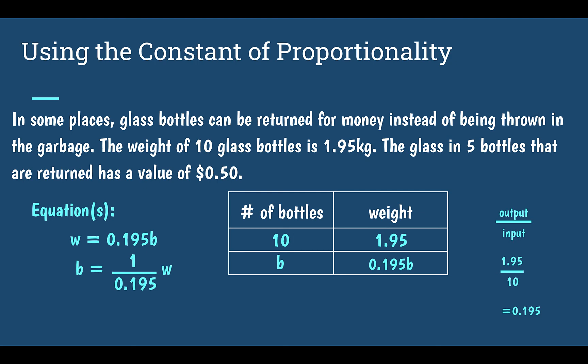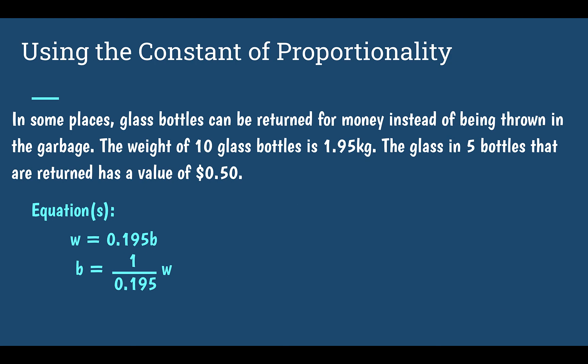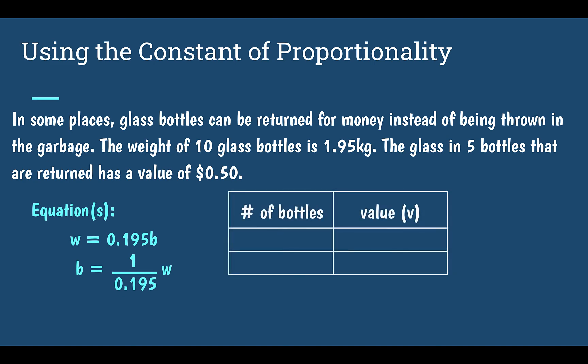Now we have another piece of information. It says that five glass bottles returned has a value of 50 cents. So five bottles is equal to 50 cents. If I want to know my constant of proportionality again...